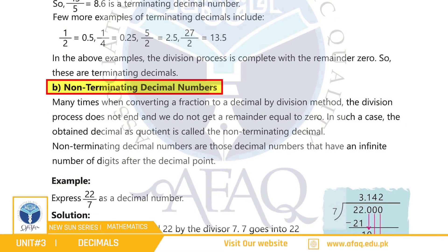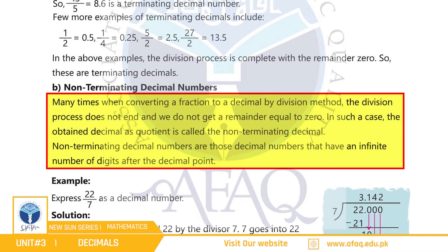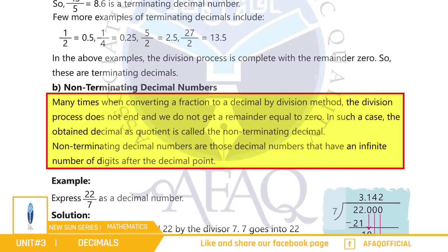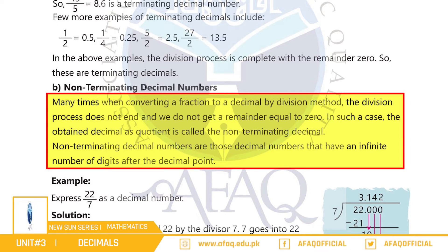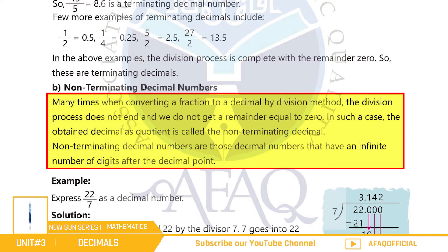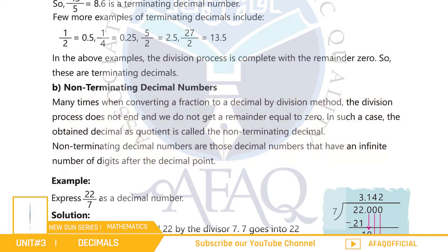Non-Terminating Decimal Numbers: بہت دفعہ ایسا ہوتا ہے جب ہم کسی fraction کو decimal میں convert کرنے کی کوشش کرتے ہیں تو division method کے تحت process چلتا رہتا ہے اور ہمارے پاس remainder zero نہیں ہو پاتا۔ اس طرح کے cases میں جو decimal quotient کی شکل میں حاصل ہوتا ہے اس کو ہم non-terminating decimal کہتے ہیں۔